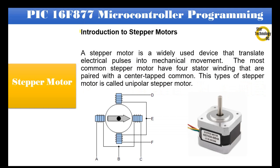Introduction to stepper motors. A stepper motor is a widely used device that translates electrical pulses into mechanical movement. The most common stepper motors have four stator windings that are paired with a center-tapped common. This type of stepper motor is called a unipolar stepper motor.